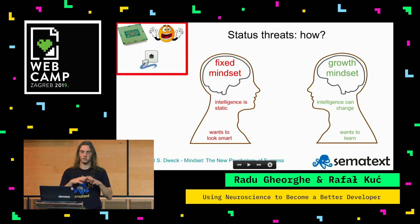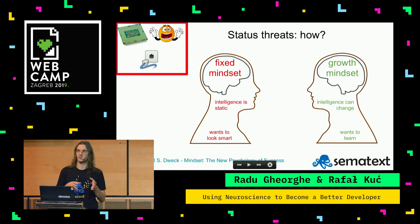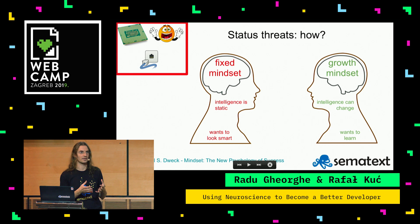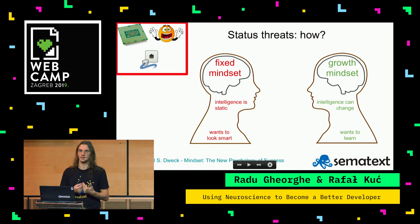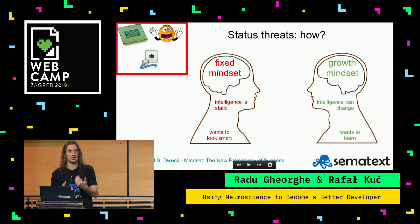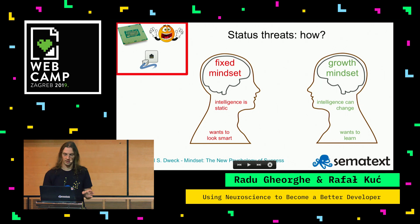Last but not least, I want to talk about the overall mindset. You might have heard of the fixed mindset versus the growth mindset. Basically, if I believe my intelligence and skills are static, then I'm more likely to feel status threats — I'm working from a position where I have to defend what I did, like 'that API is perfect as it is.' As opposed to being more focused on learning, on what can I do better. Rafal's going to talk much more about learning.